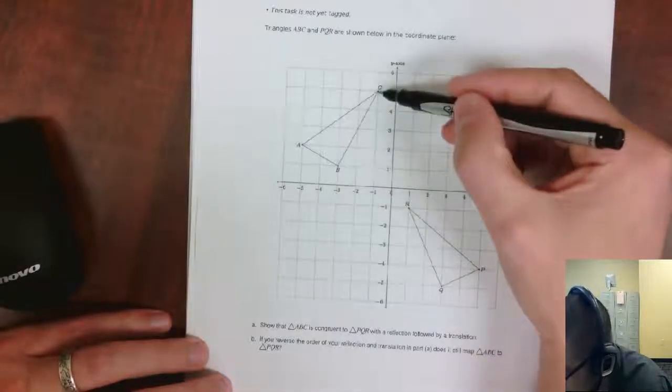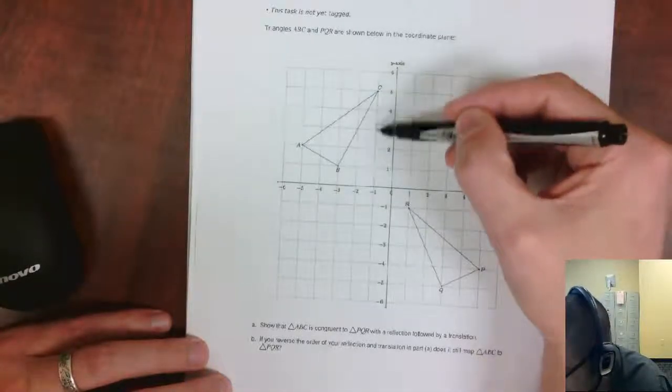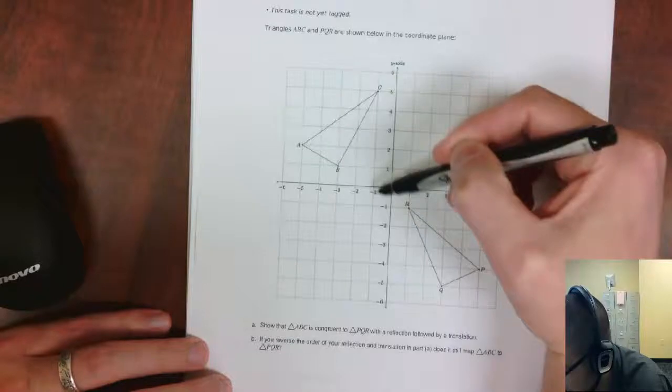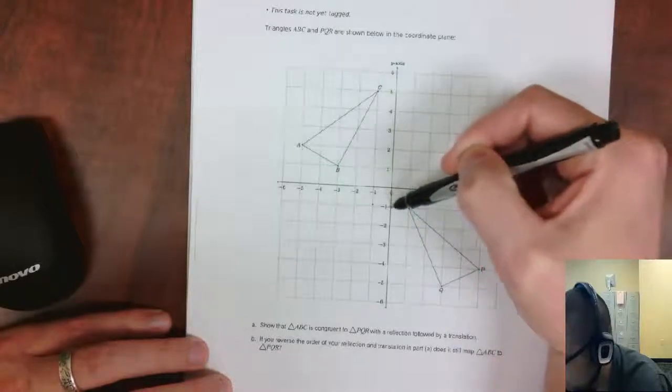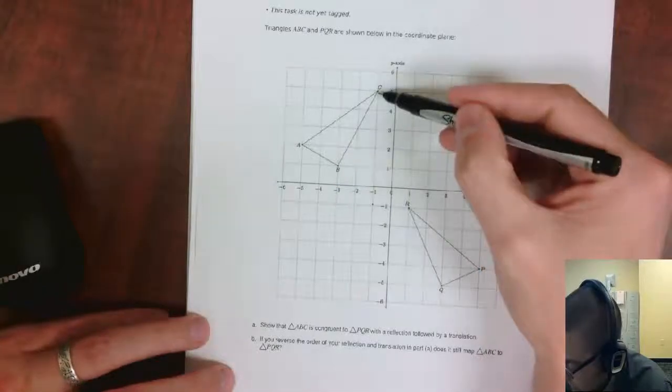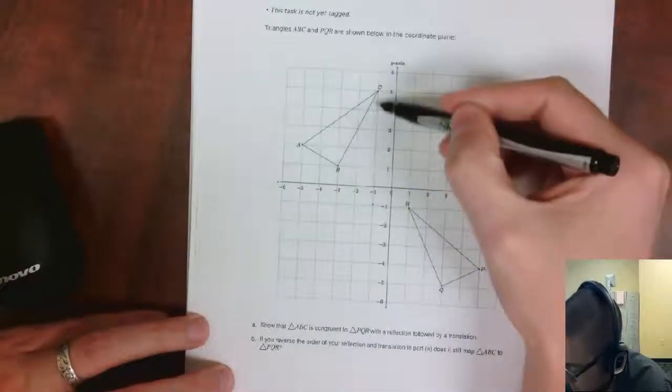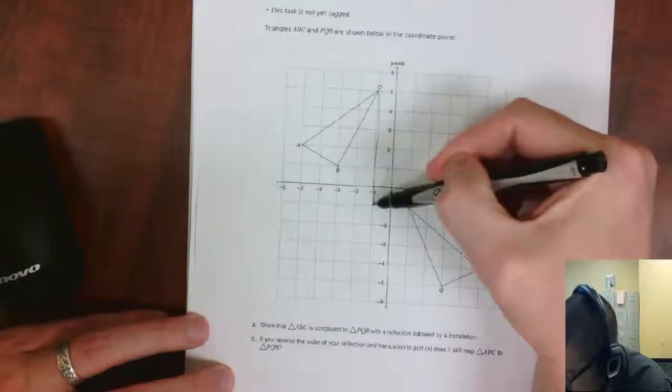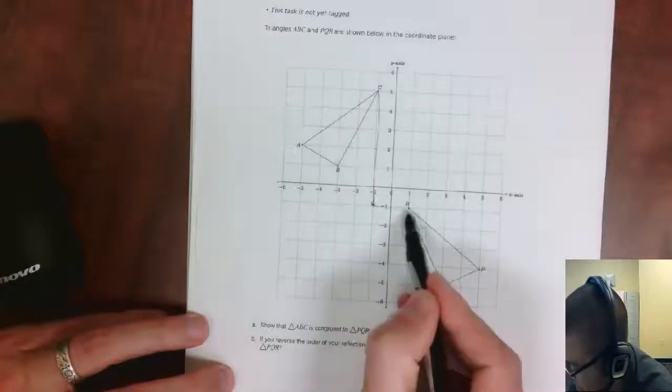So that translation would be going down 1, 2, 3, 4, 5, 6, over 1, 2. So if I do that to all the points, if I go down 6 and over 2, I'm going down 6 over 2 to get to R.